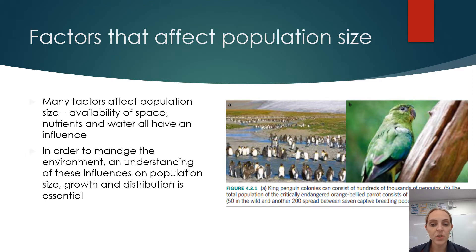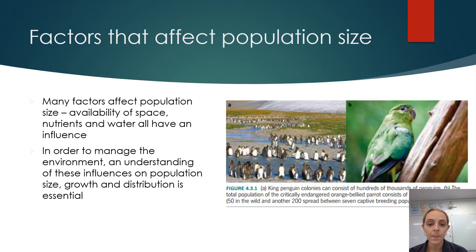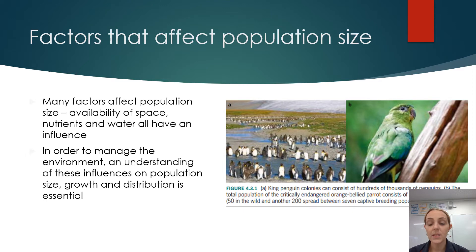With the images from Pearson 4.3.1, you can see larger populations like penguin colonies with many hundreds to thousands of penguins, whereas we have endangered species like the orange-bellied parrot on the right, which is heavily endangered. We can look at the different factors that might be limiting the parrot population compared to larger colonies like the penguins.